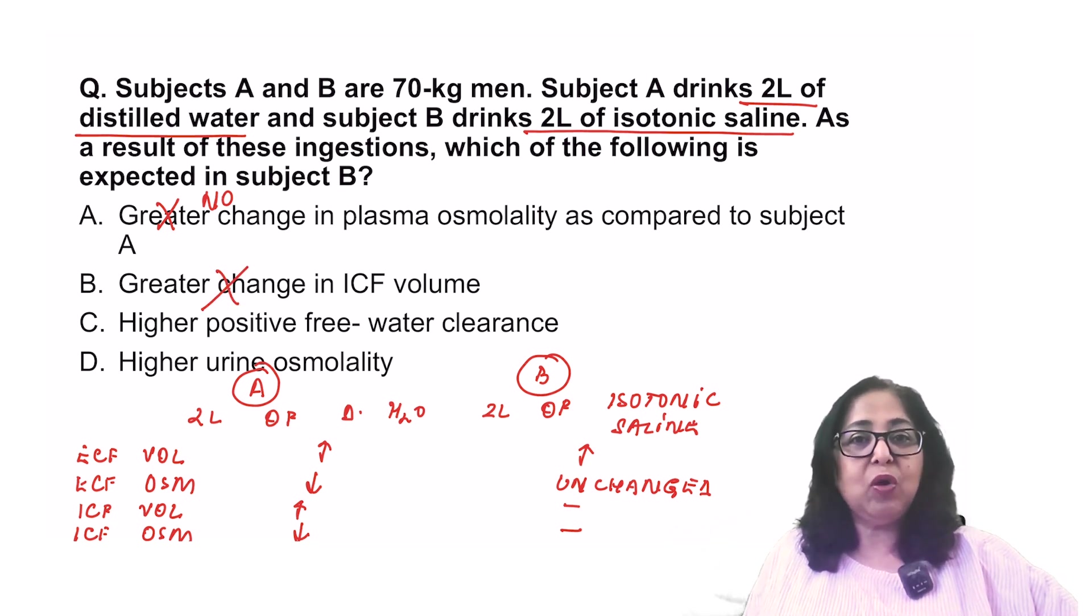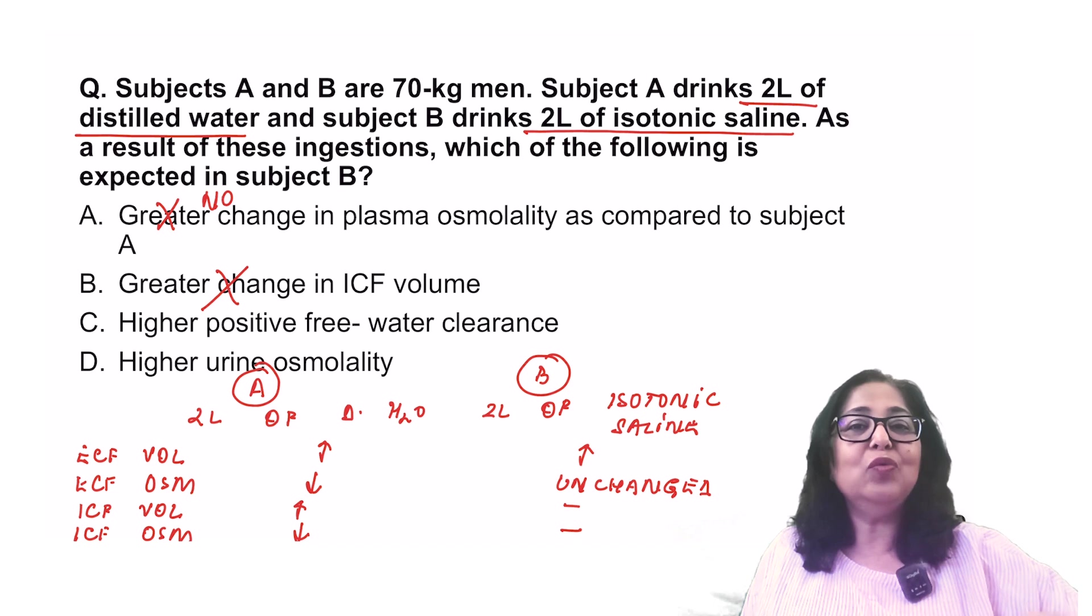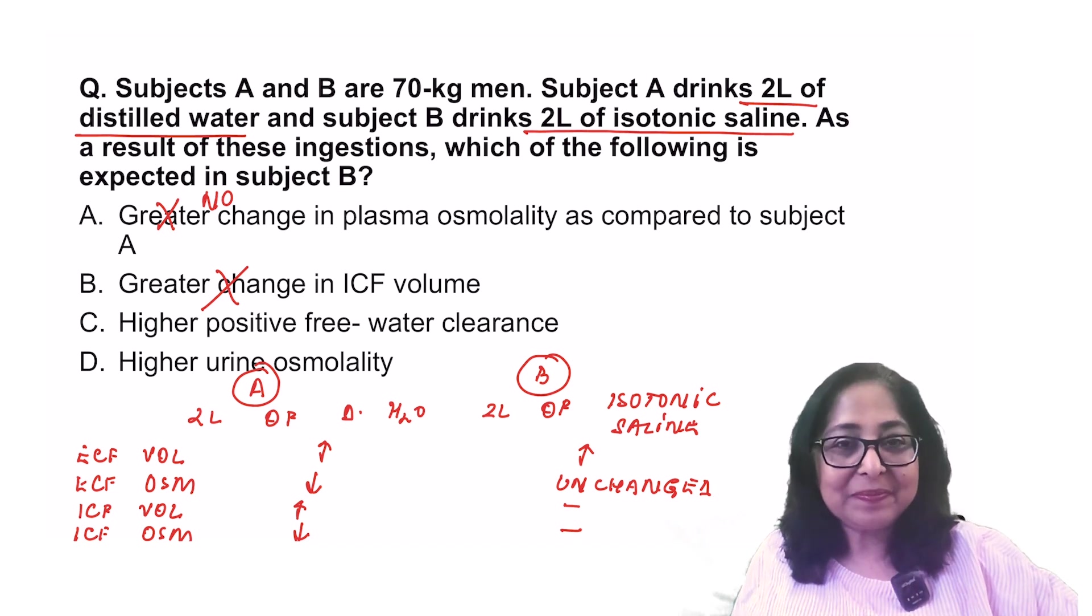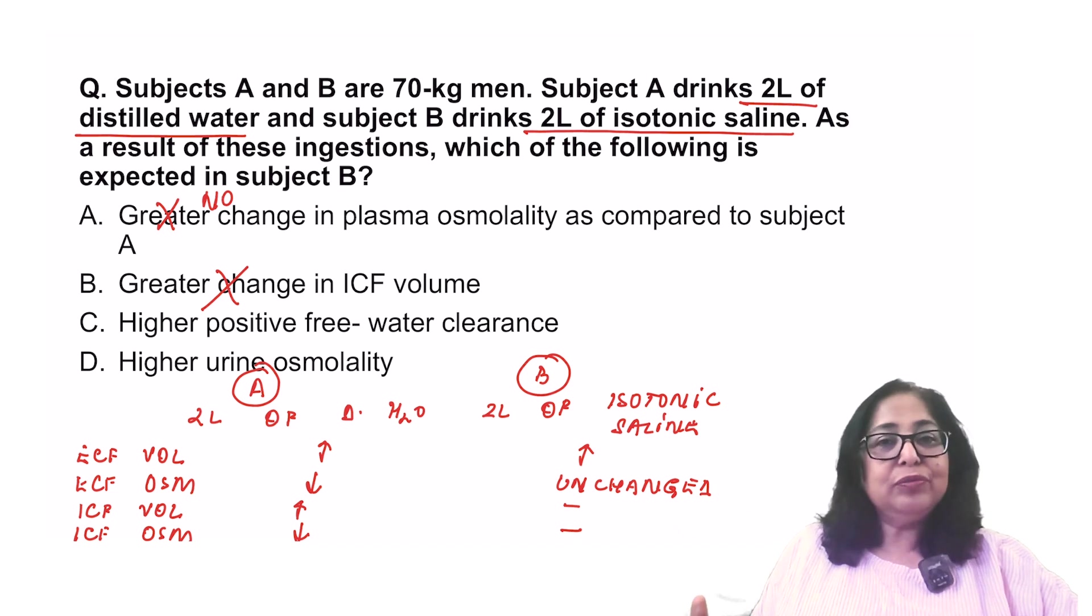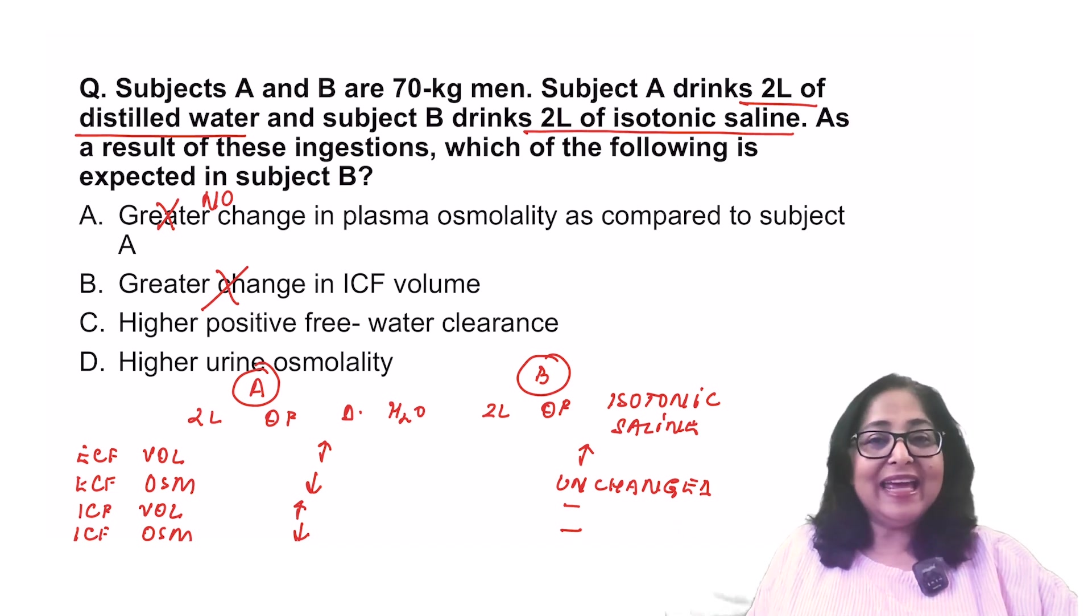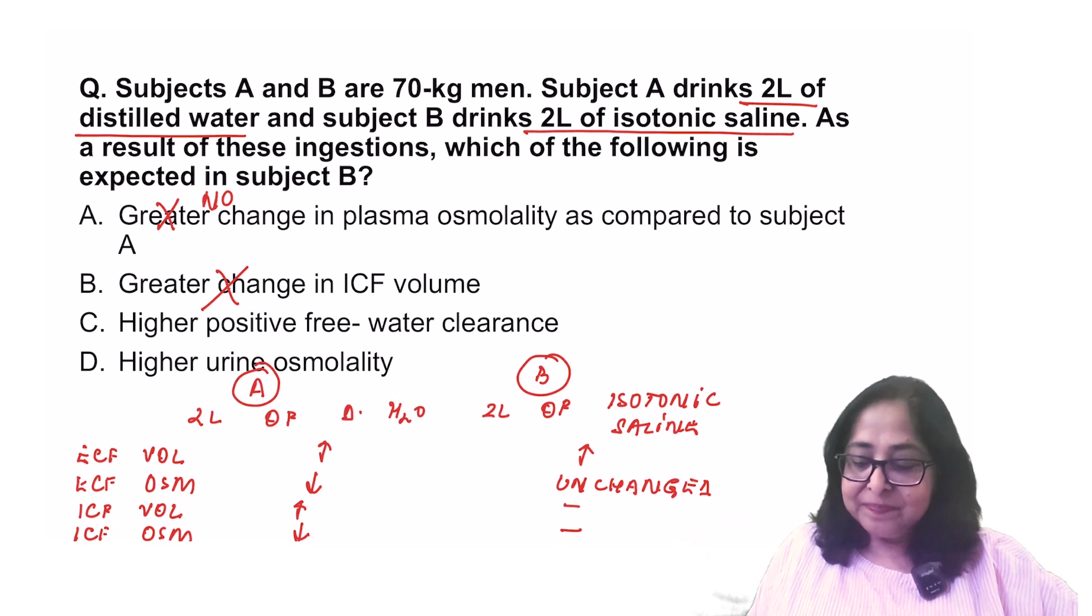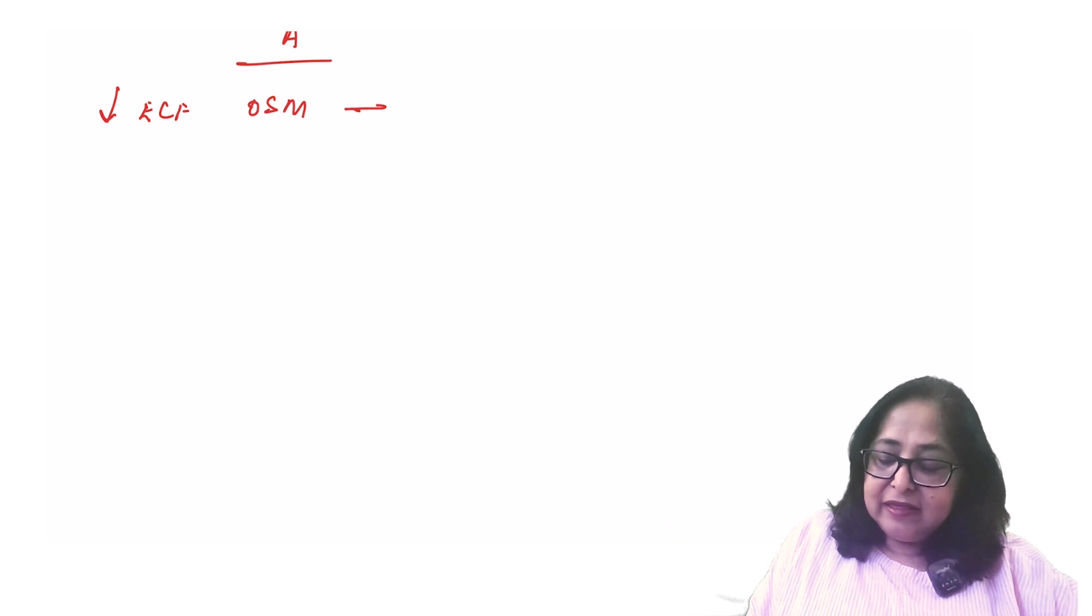Higher positive free water clearance. What is positive free water clearance? Positive free water clearance means that the urine is dilute. Now, in which of these two will I get a dilute urine? You must understand, now in subject A, there is a reduction in the ECF osmolality. This now reduces the secretion of ADH.